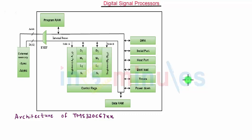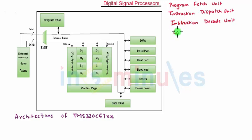This type of device can execute up to 32 bit instructions per cycle. This consists of program fetch unit, instruction dispatch unit, instruction decode unit, control registers, control logic, test emulation and interrupt logic.